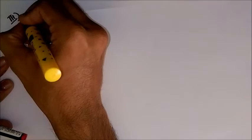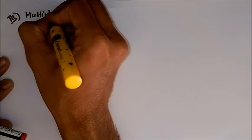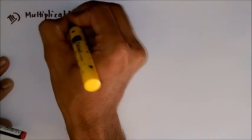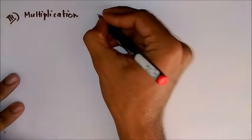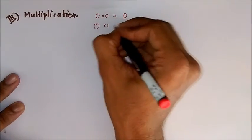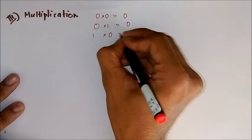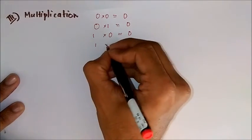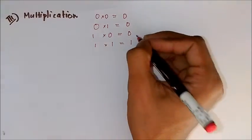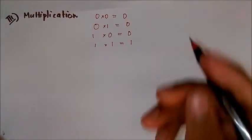Now let's directly move on to multiplication. For multiplication there are also similar rules: 0 into 0 equals 0; 0 into 1 equals 0; 1 into 0 equals 0; 1 into 1 equals 1. This is just like ordinary multiplication, so it's easy to memorize.